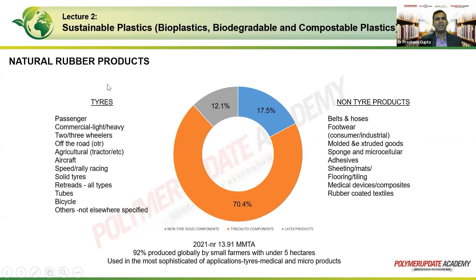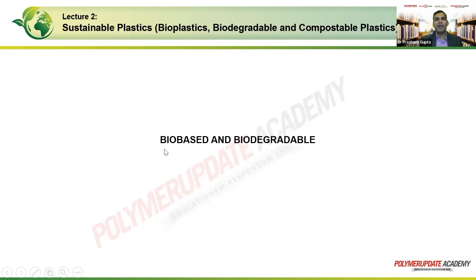The rubber market is predominantly driven by the tire industry. Non-tire solid components and latex products cover applications such as belts, hoses, footwear, consumer and industrial molded and extruded goods, piping, sponge or microcellular materials like shoe soles, adhesives, sheeting, mats such as gym mats, and flooring tiles used for play areas to improve impact absorption.